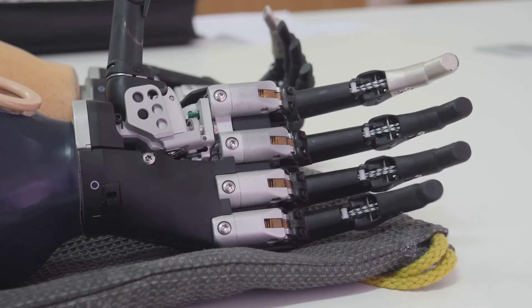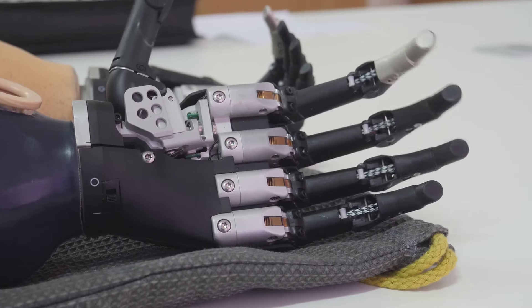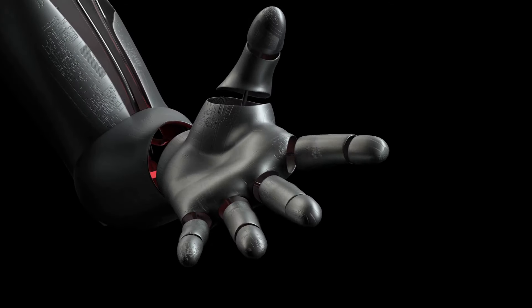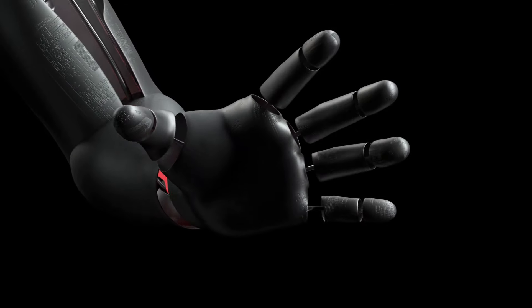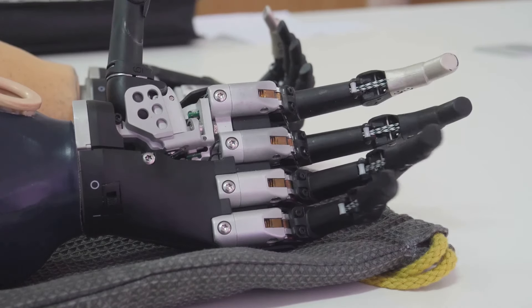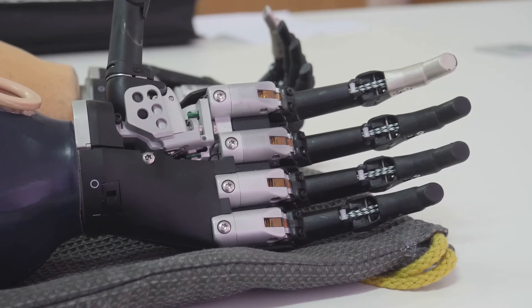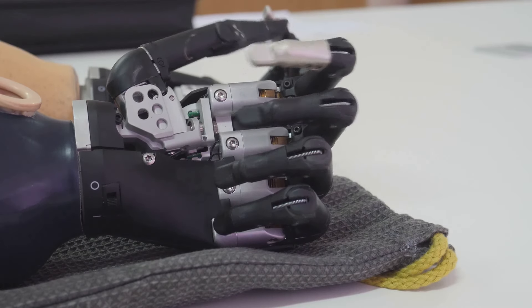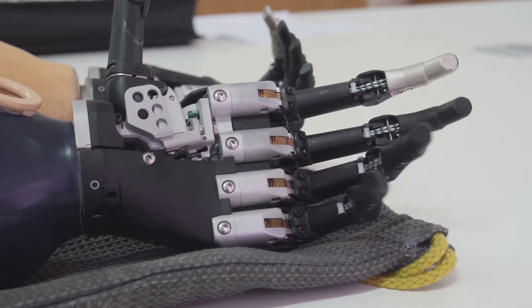John distinguishes itself from its predecessors through its groundbreaking combination of hardware and software. Its most striking feature, as its name suggests, is its hands. These are not mere robotic grippers, but highly articulated appendages capable of mimicking the dexterity and finesse of human hands. Each finger is equipped with an array of sensors, providing John with an exceptional sense of touch and pressure sensitivity.